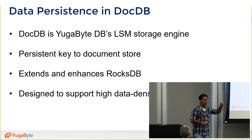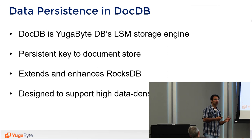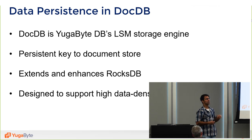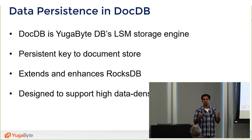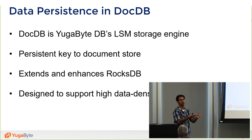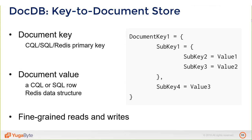DocDB is designed for high data density per node. From HBase experience running 48 terabytes of data density per node on spinning disk, a lot of that architecture finds its way into DocDB — making it optimal for massive workloads. This is especially important in the cloud because storage is cheaper than compute. You want to pack as much data as possible; adding CPUs just to store more data will explode your cloud bill.